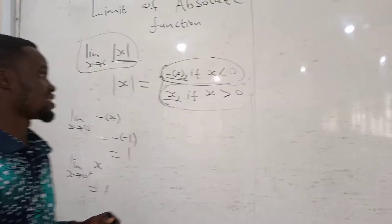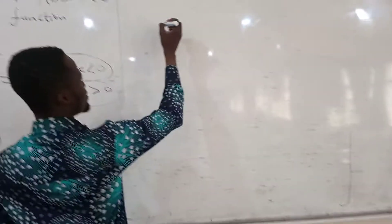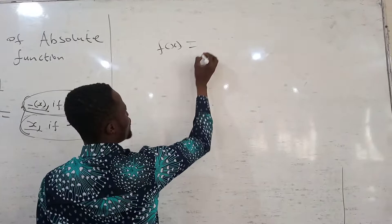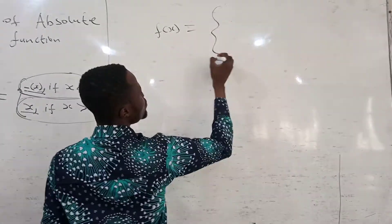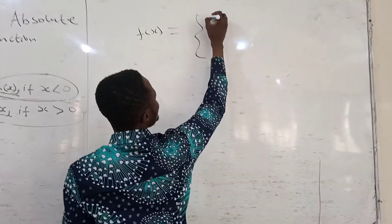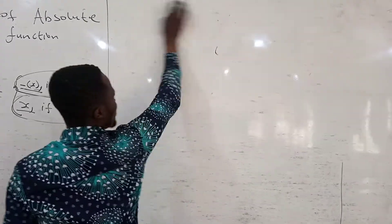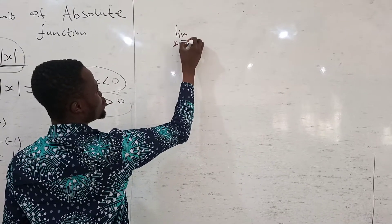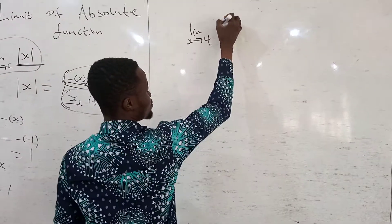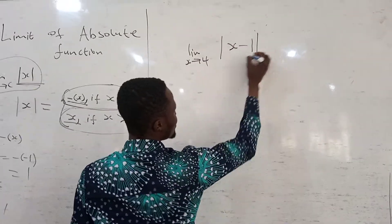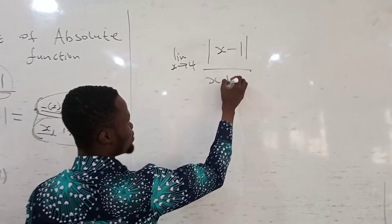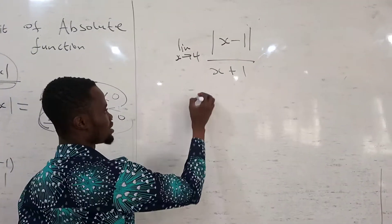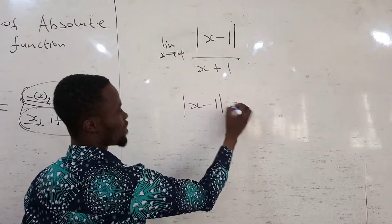Let me give a specific example. We have the limit as x goes to four of absolute value of x minus one, all divided by x plus one. For this one, I need to change the absolute value into piecewise function form.